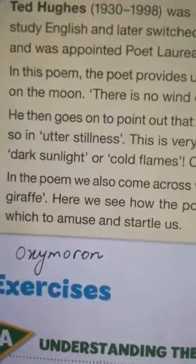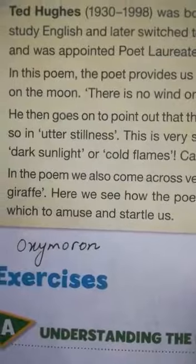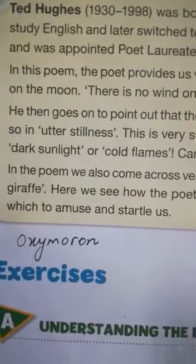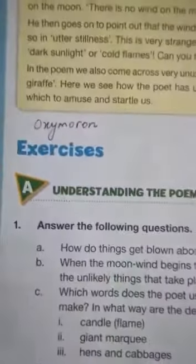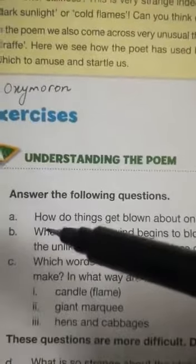We have already discussed what the purpose of writing such an unusual poem is — just to make us surprised and to strike our imagination. Now come over to the exercise on page 26, Exercise A: Understanding the Poem. Answer the following questions. Part one is: how do things get blown about on the moon if there is no wind?